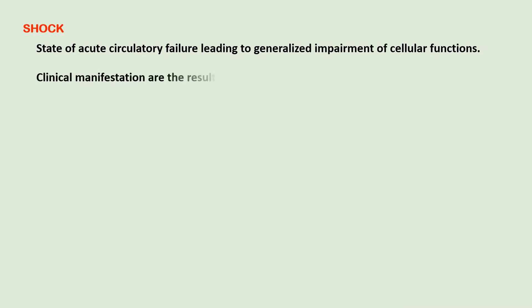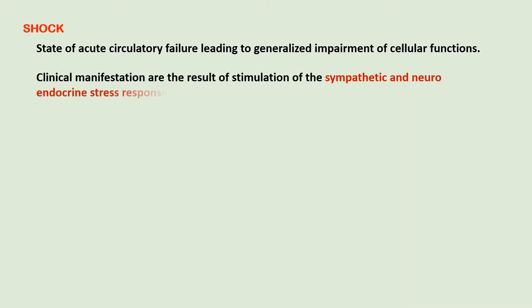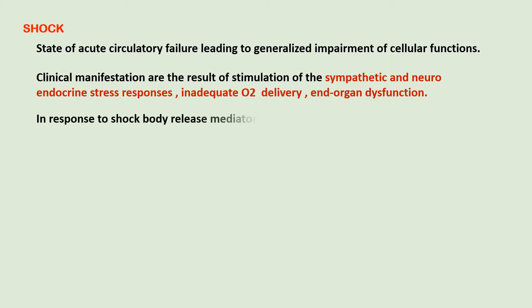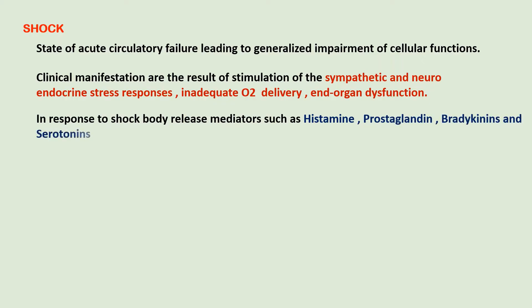In shock, the cardiac output is inadequate to provide tissue perfusion. Clinical manifestations result mainly from stimulation of sympathetic and neuroendocrine stress responses, and from inadequate oxygen delivery — that is hypoxia — and end organ dysfunction. In response to shock, the body releases various mediators such as histamine, prostaglandins, bradykinins, and serotonin, leading to capillary dilation and increased capillary permeability, which further reduces blood pressure and cardiac output.